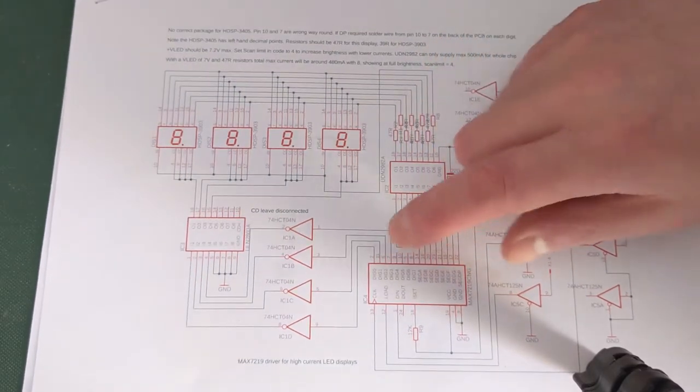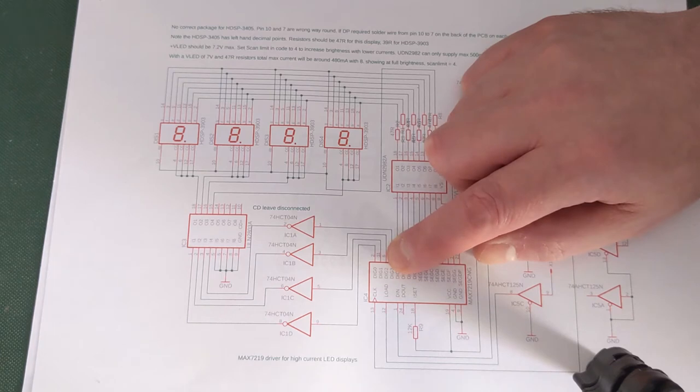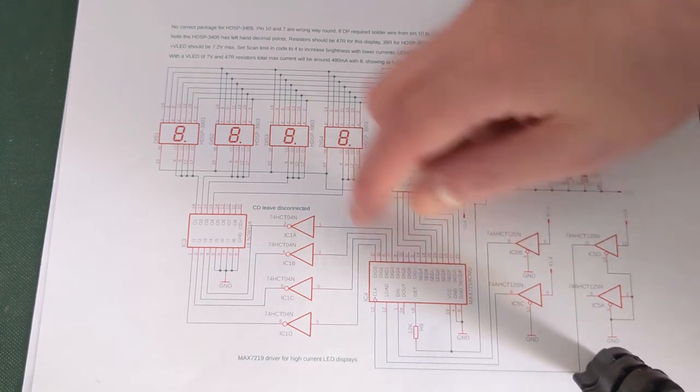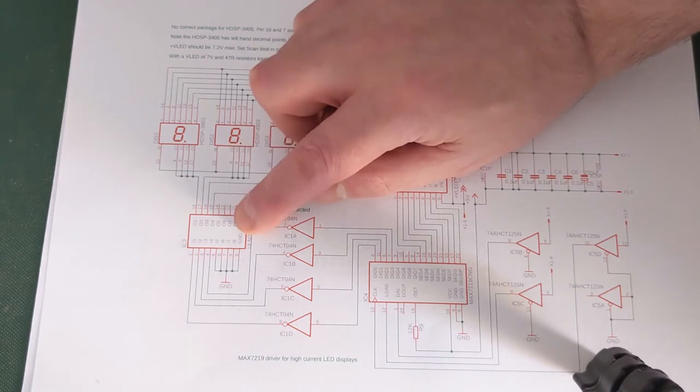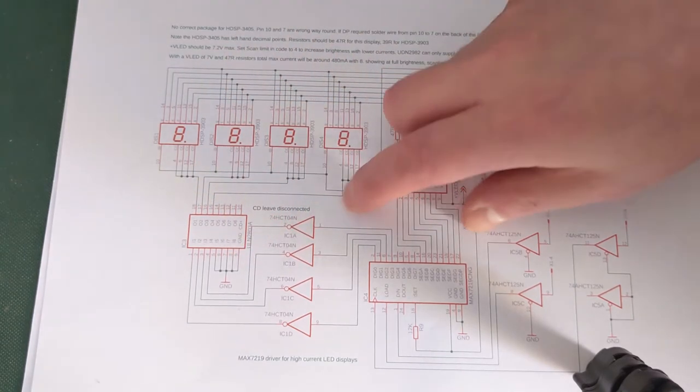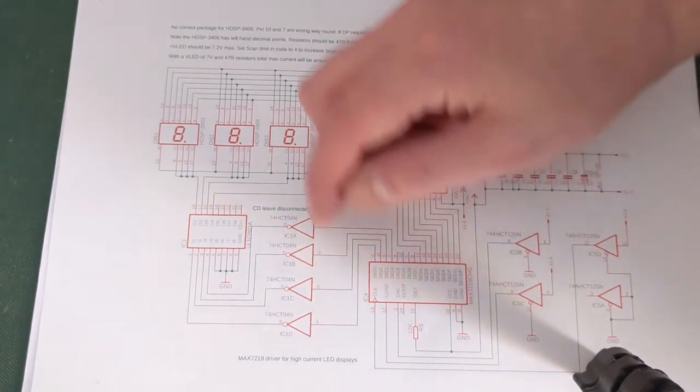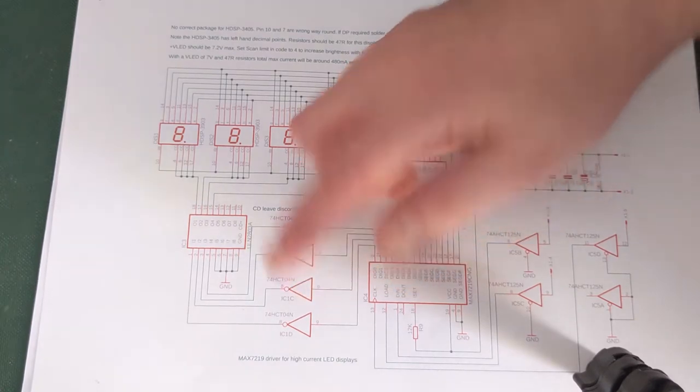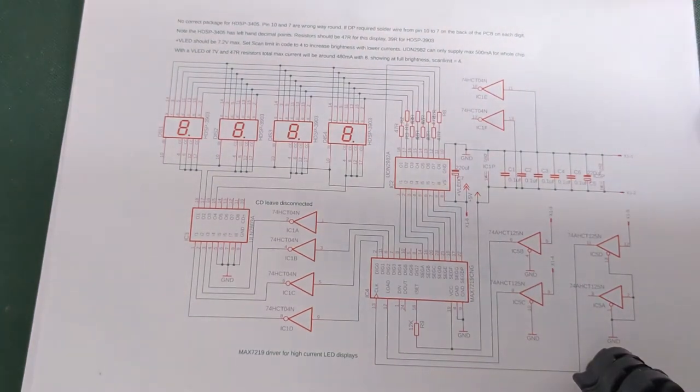Now this chip here is a logic inverter. That's required because when the digit is on, your digit output pins are going to be at the logic zero level. And your ULN2803A needs a logic one to turn the output on, which sinks it down to ground. So I've put a 74HCT04 to change it from a logic zero to logic one.